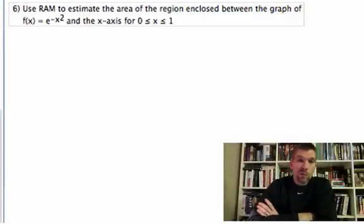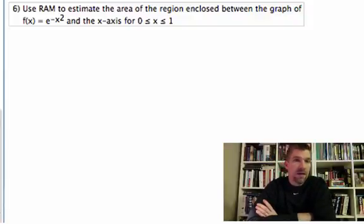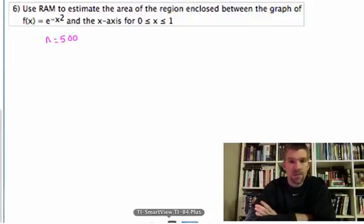Okay, on this problem, we want to use RAM to estimate the area of the region enclosed between the graph of f(x) equals e to the negative x squared and the x-axis from 0 to 1. Those are the values we're really interested in, from 0 to 1. And if we're going to use RAM to get an estimate, then we want to put as many rectangles in there as we can. And so I think a good plan of action here is to let n equal 500. If we can put 500 in, then that will give us a really good approximation. It won't be exact, but it'll be a really good approximation of the area under the curve.